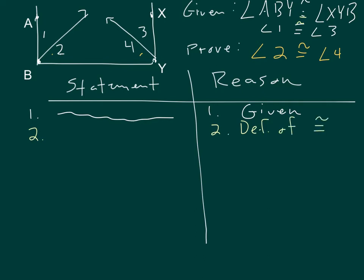And then start using the language of the measure of angle ABY is equal to the measure of angle XYB. And the measure of angle 1 is equal to the measure of angle 3.